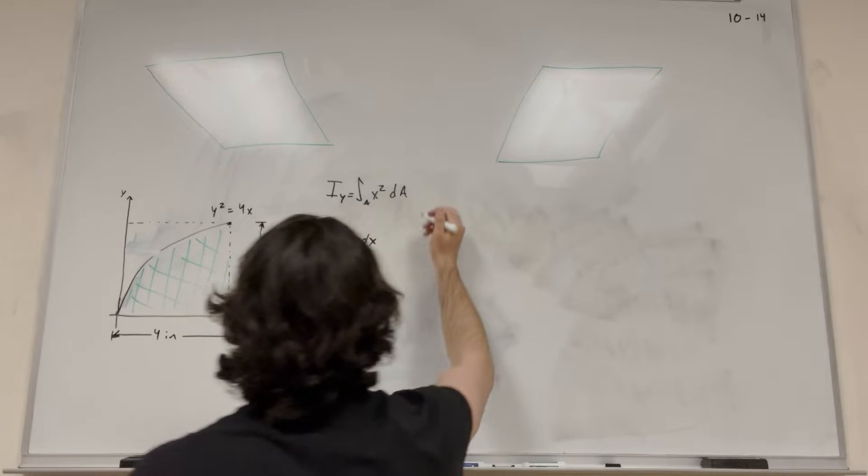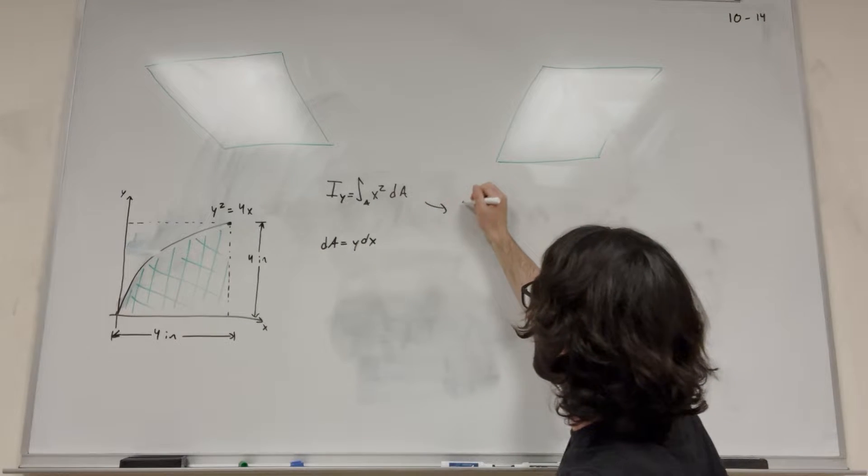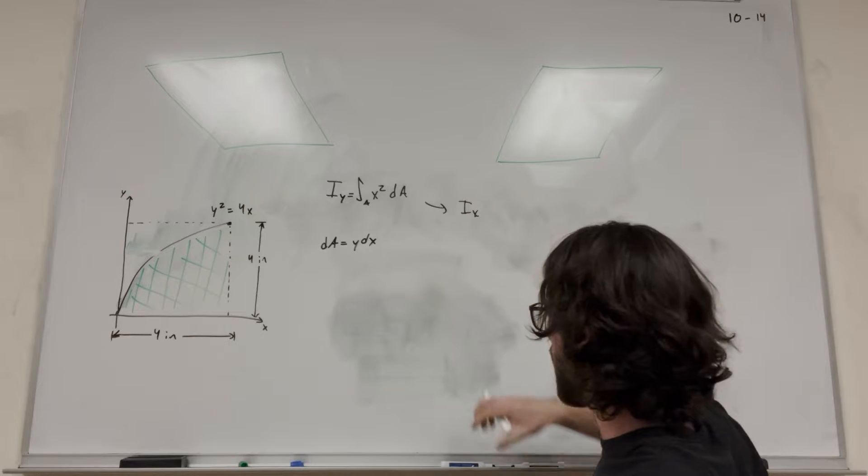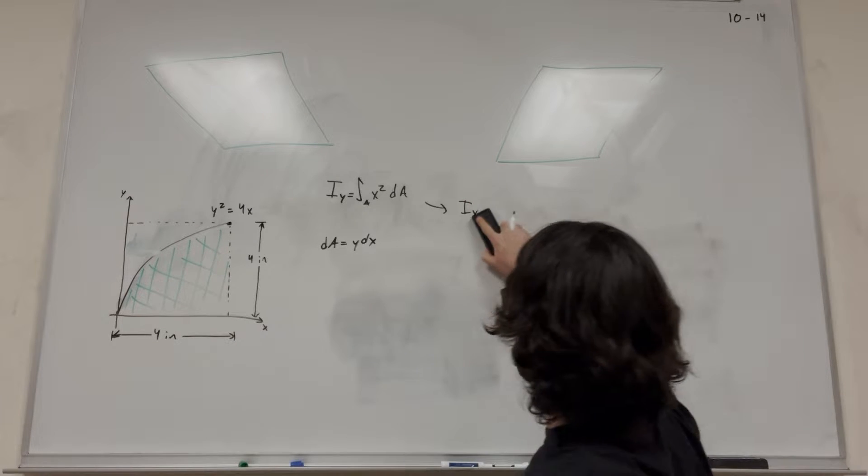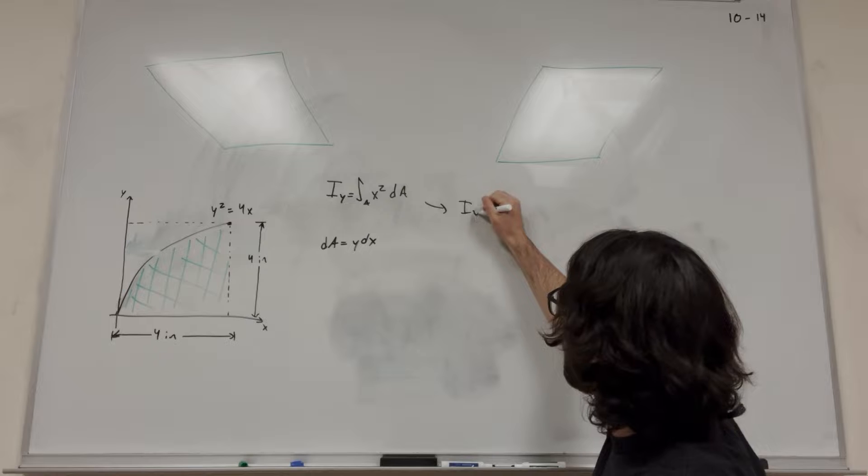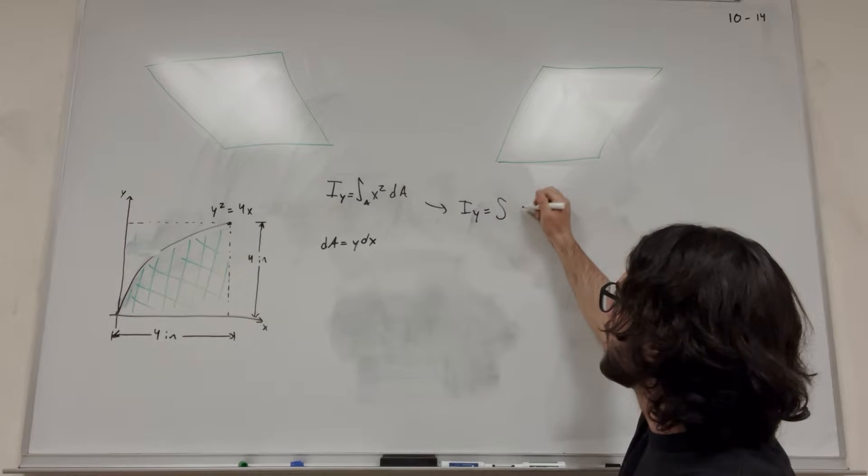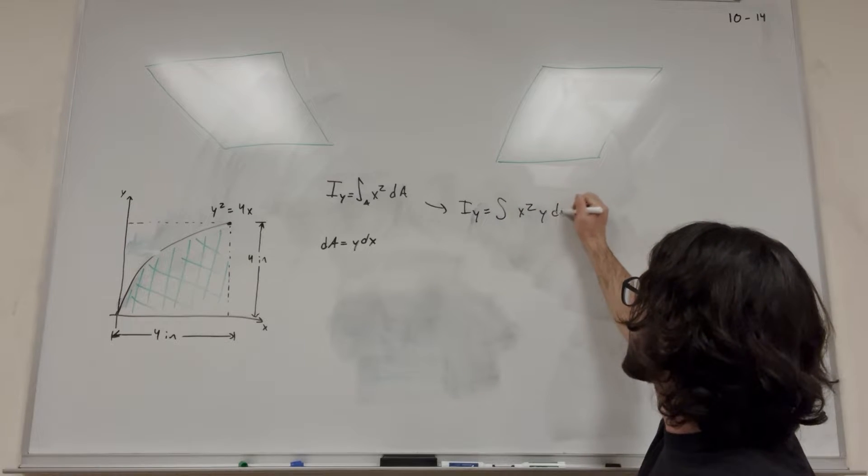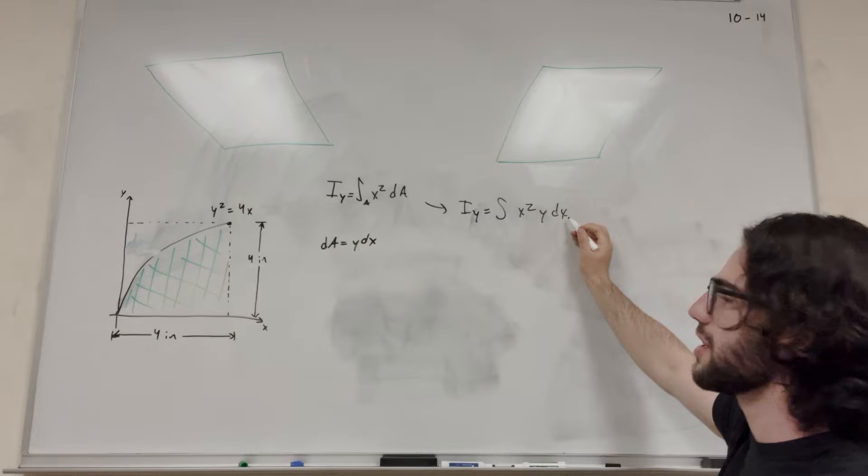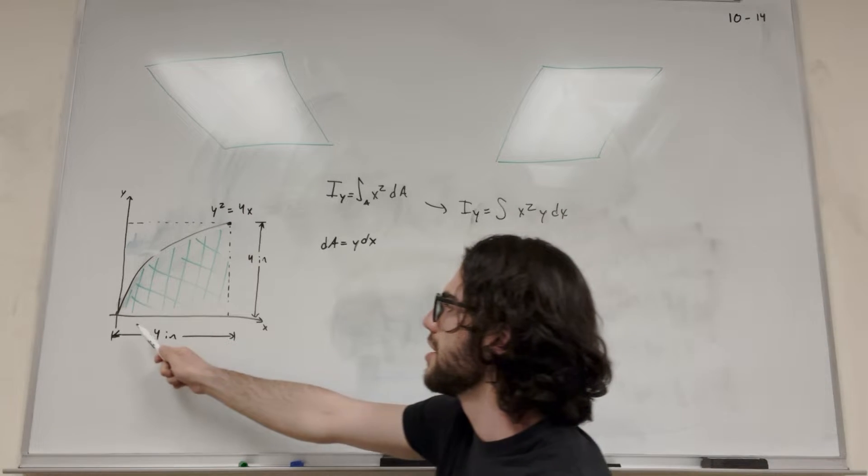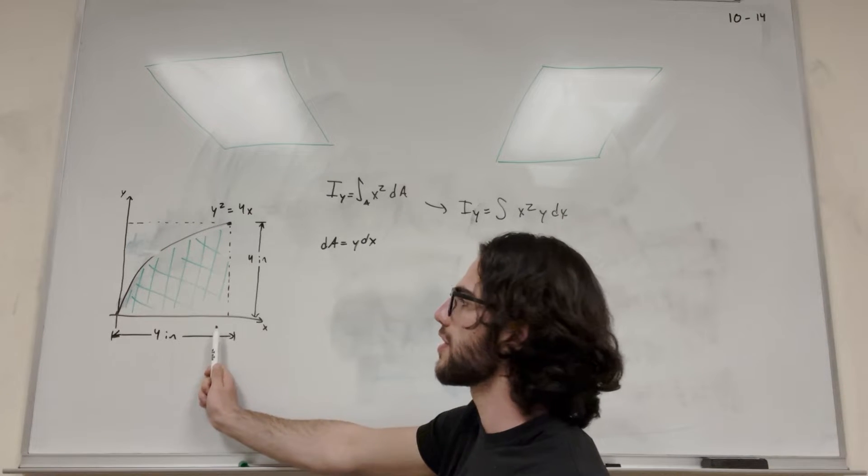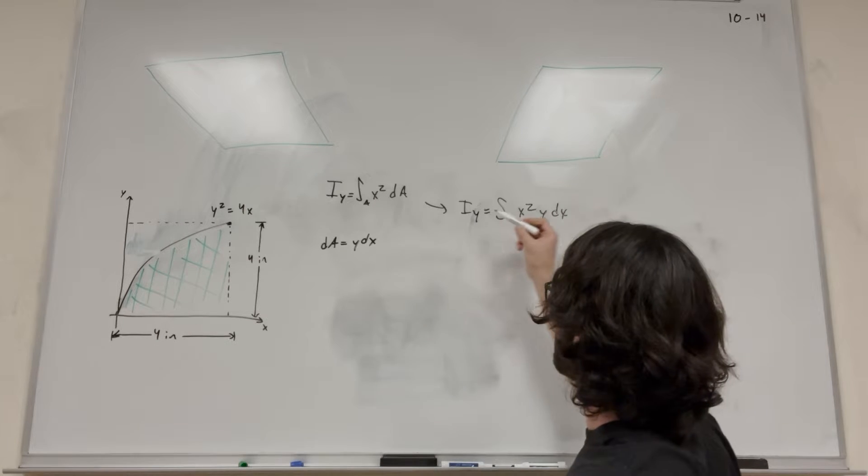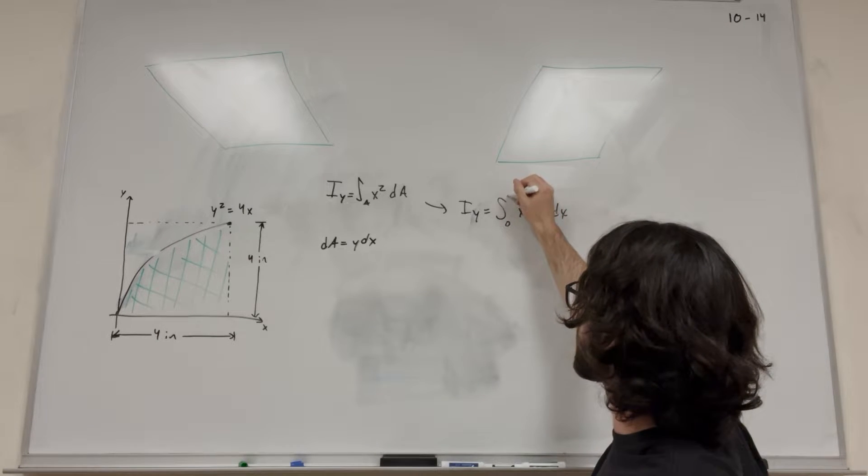So let's just go ahead and put this into our integral. So I_y, we're doing y, is equal to the integral of x squared y dx. And our integral is dx, so dx goes from 0 to 4. Those are our bounds for x, 4 inches. So we can put 0 to 4 on our integral here.